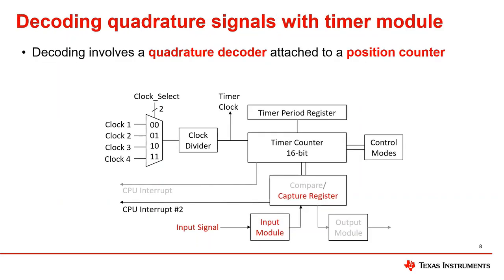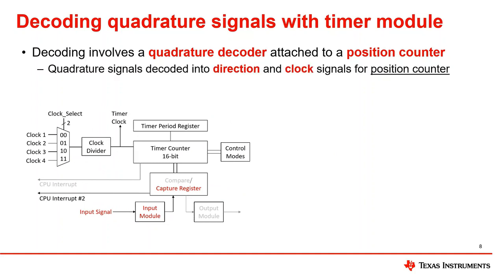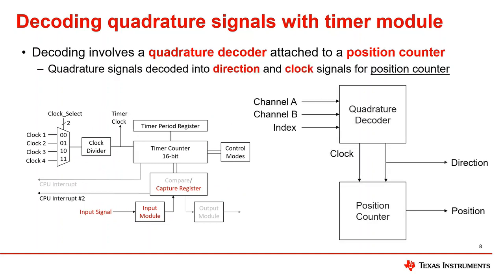Now that we've gone over the basics of quadrature encoders, we can move on to the process of decoding the signals into relevant position and movement information. This involves the timer module which implements a quadrature decoder attached to a position counter. The three quadrature signals serve as inputs into the timer module. The timer needs to be configured in capture mode so that information such as the rising and falling edges of the quadrature signals and their frequency can be captured. The quadrature decoder module decodes the quadrature waveforms into direction and clock signals, which are fed into a position counter that keeps track of the incremental position of the encoder. Both the direction and current position can be read at any point in time.